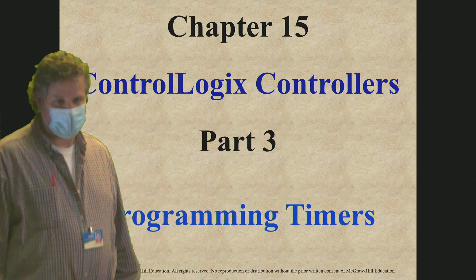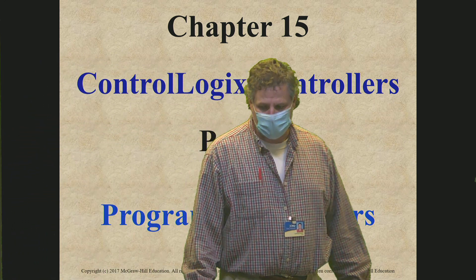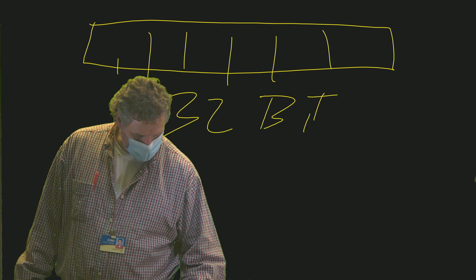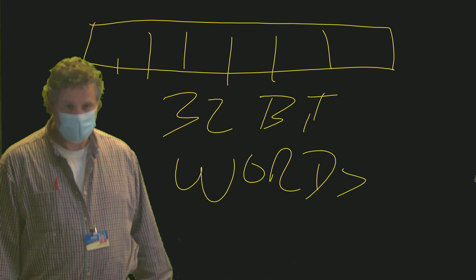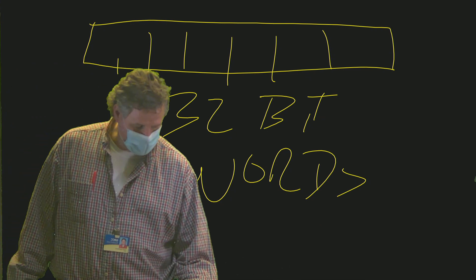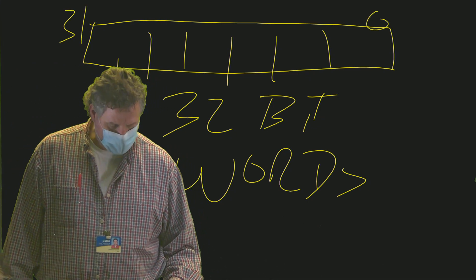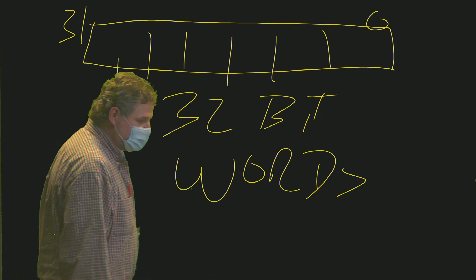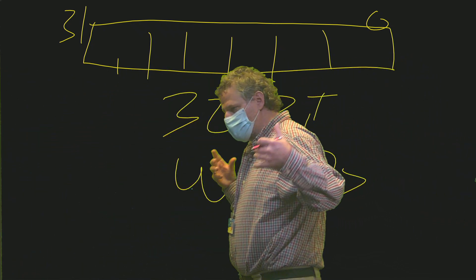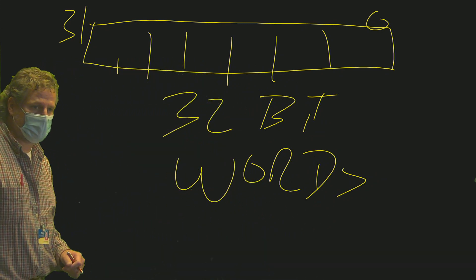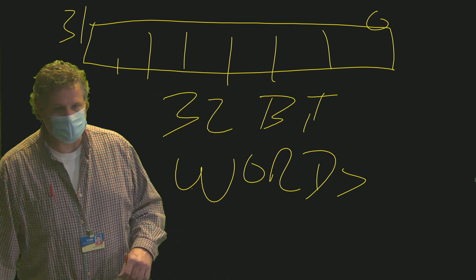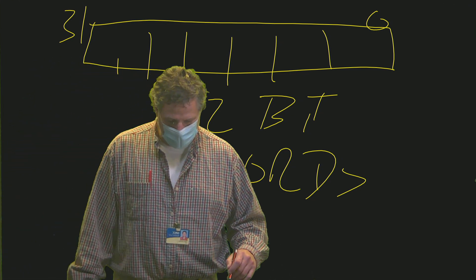We're looking at the ControlLogix controllers. The ControlLogix controller is a 32-bit based technology. When we're talking 32-bit based, what does that mean? It has 32-bit words in it — counting 0 to 31. So when we're talking 32-bit word technology, we're talking a much larger word. We can get a much larger value out of our timers. If you remember the old 500, we were stuck at 32,767 — that was the maximum value. Now we've got a value way larger than that.